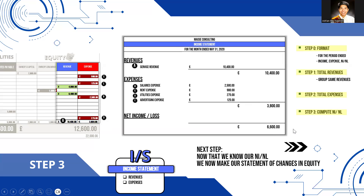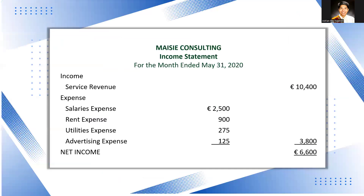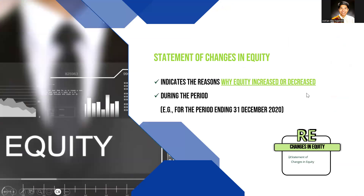Now that we know our net income, the next step is the statement of changes in equity. Our statement of retained earnings or changes in equity basically shows how equity increased or decreased during a period of time. Similar to the income statement, it covers a period of time, so the header reads 'for the period ending blank.' The format: three headers — name of company, name of the financial statement (statement of changes in owner's equity), and the period it covers.